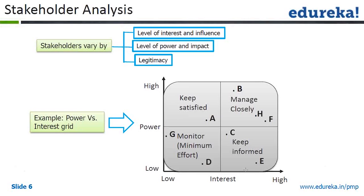On one side of the power-interest grid is power, and on the other side is interest, with low and high at each conjunction. All those people who fall in the high-interest, high-power quadrant are the people who need to be managed closely — that means you as a project manager need to talk to them every day.